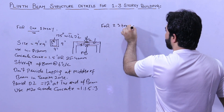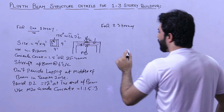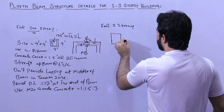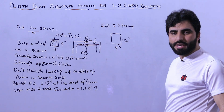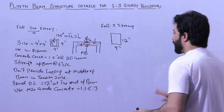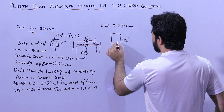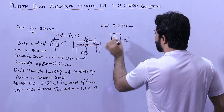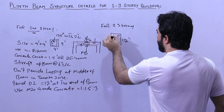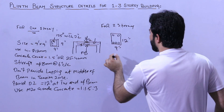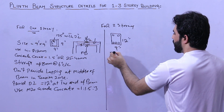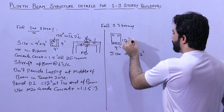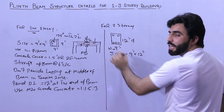Now let me guide you for two story. The size of beam should be 9 inches by 12 inches — do not use less than 9 by 12 inches for a normal residential building. Use five numbers of steel rods: three at the bottom and two at the top. The size is 9 inches by 12 inches — depth is 12 inches and width is 9 inches.